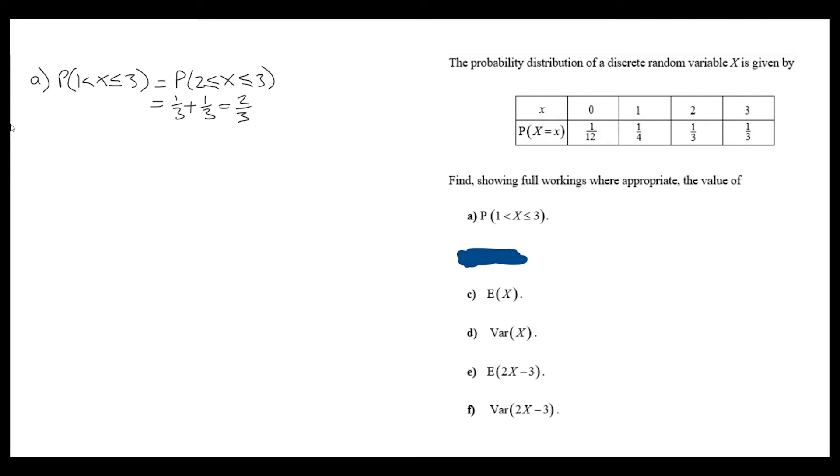Next, we're asked to find the expectation of x. The expectation of x we find by doing the product sum of the x values and the associated probability. So, I'm not going to bother with 0 times 1 twelfth, but I do have three products here: 1 times a quarter, 2 times a third, and 3 times a third.